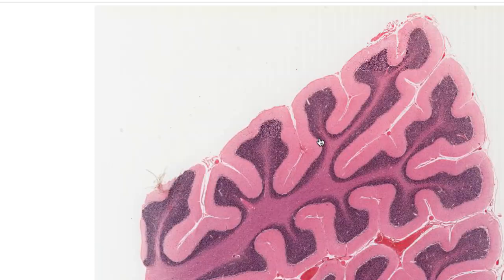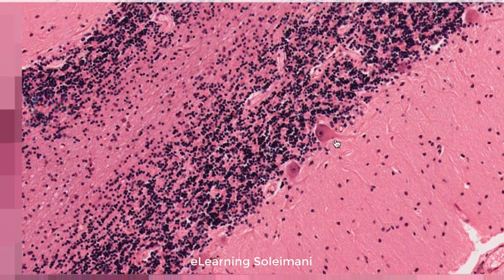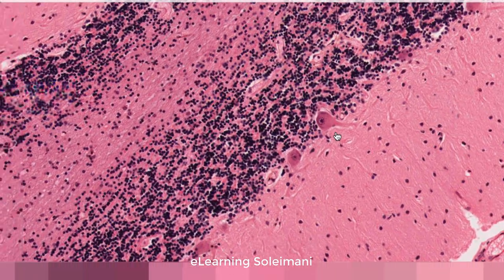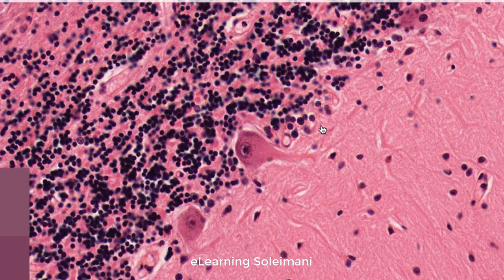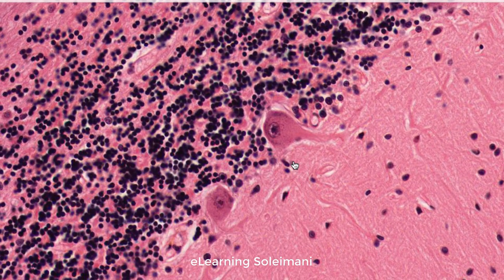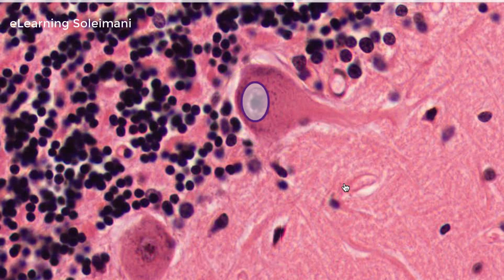We increase the magnification to see the visible parts of this cell. The characteristic features of a typical Purkinje cell include a large soma with a prominent nucleus and large dendritic arborization.